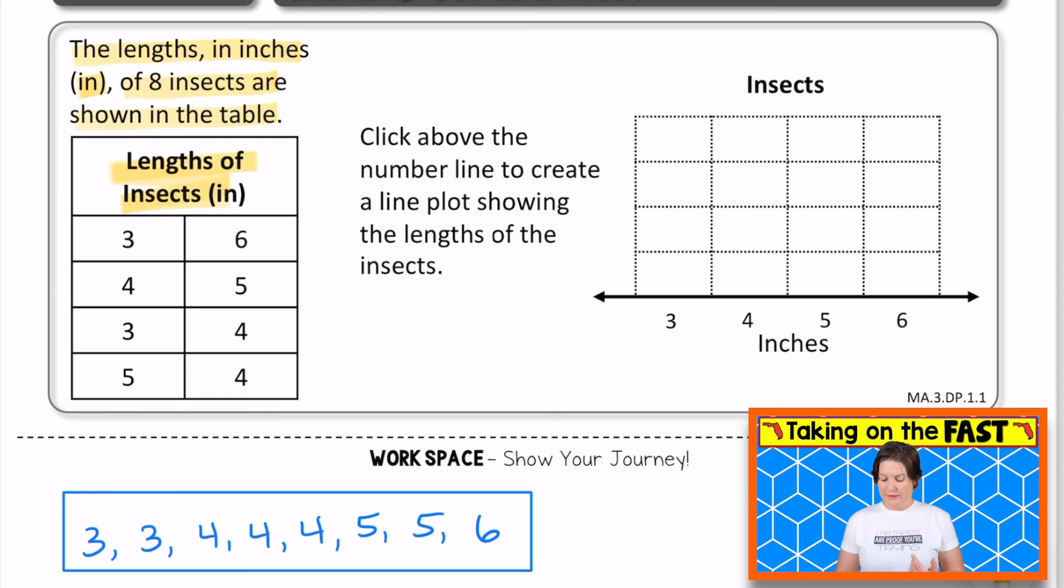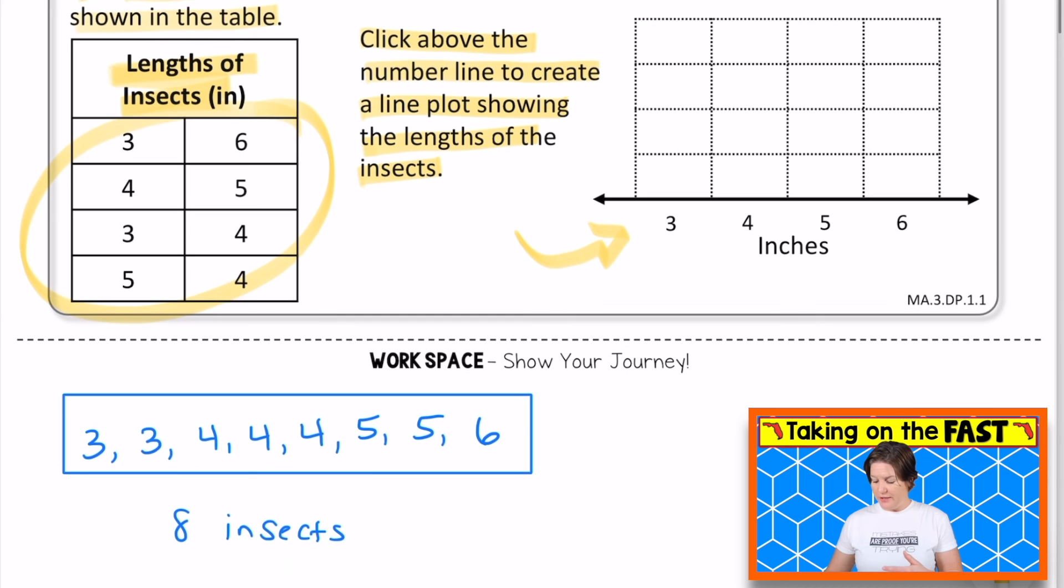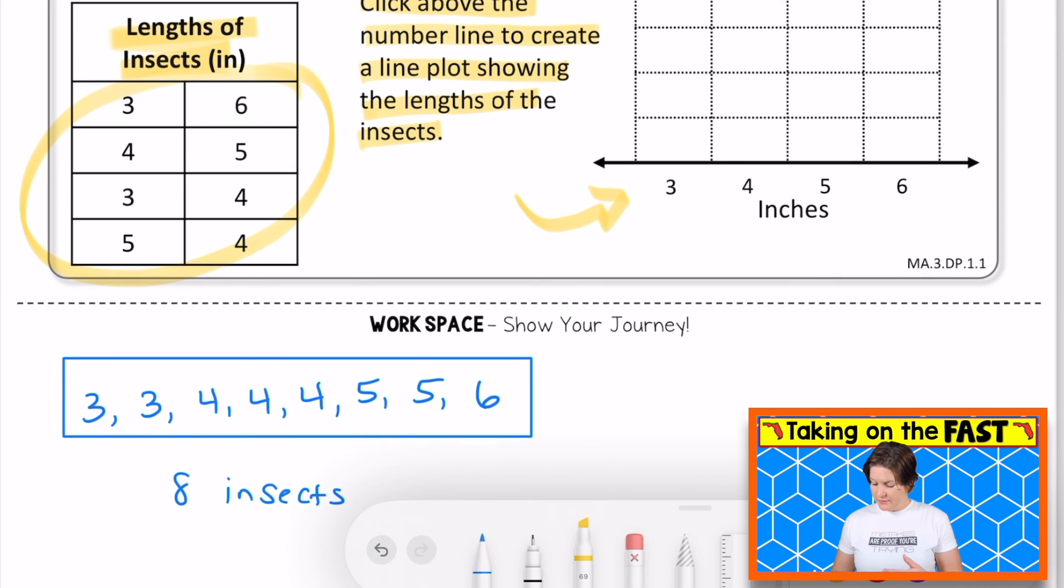So we've got a table here with the length of eight insects there, three inches, four inches, three inches, five inches, and so on. It says to click the number line to create a line plot showing the lengths of the insects. So over here we have our line plot. And I did show a little bit of my journey down here, putting them in order.